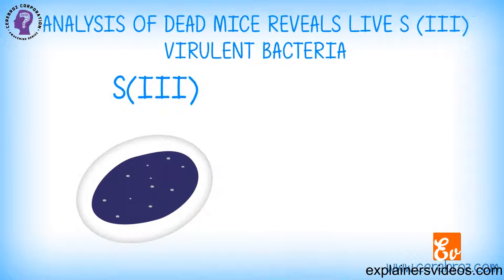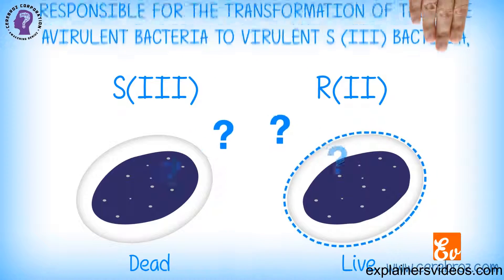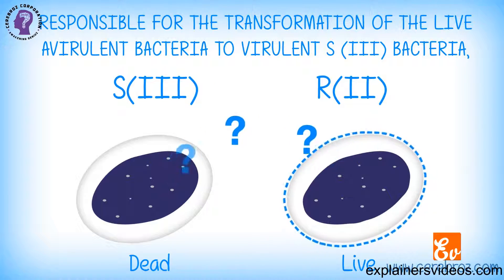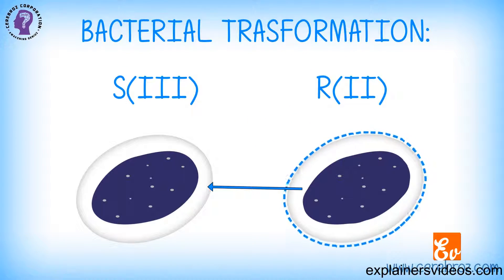Analysis of dead mice reveals live S3 virulent bacteria, suggesting something from the heat-killed S3 had transformed the live avirulent R2 bacteria to virulent S3 bacteria, causing death of mice. This is called bacterial transformation.